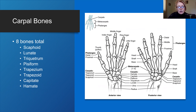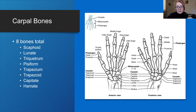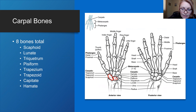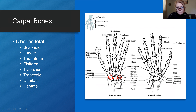Now moving to the carpal bones, which make up your wrist. There are two rows of four carpal bones each. The proximal row contains four bones and the distal row contains four bones. Starting from the thumb side going toward the little finger: the proximal row consists of the scaphoid, lunate, triquetrum, and pisiform. The distal row consists of the trapezium, trapezoid, capitate, and hamate.